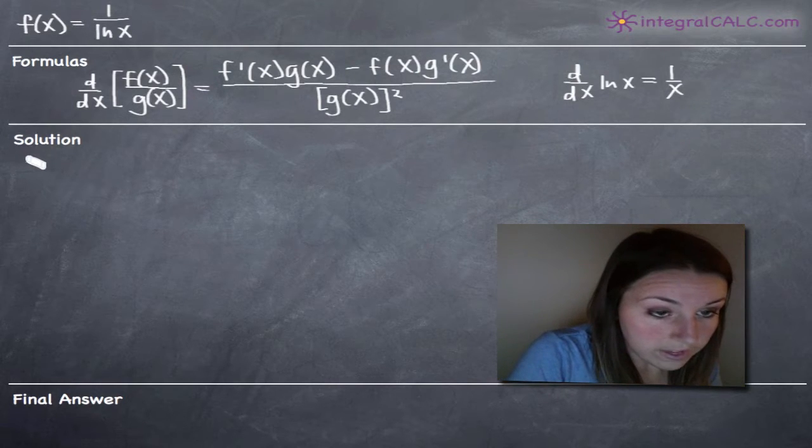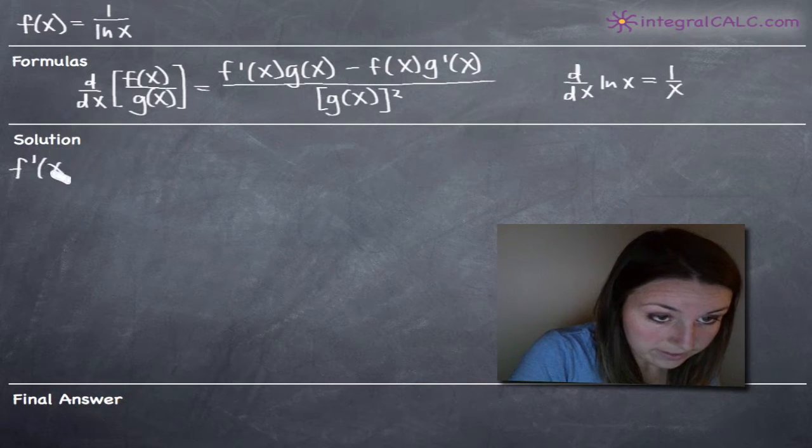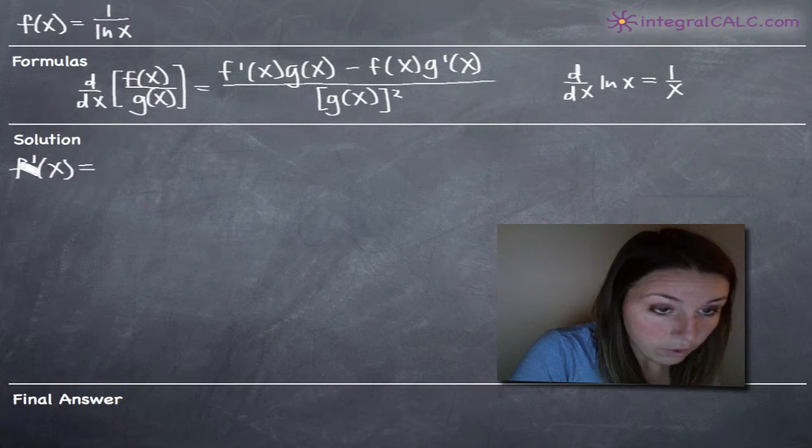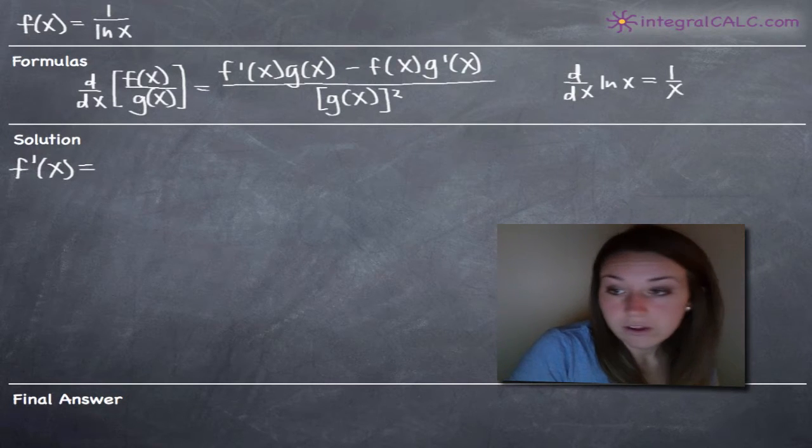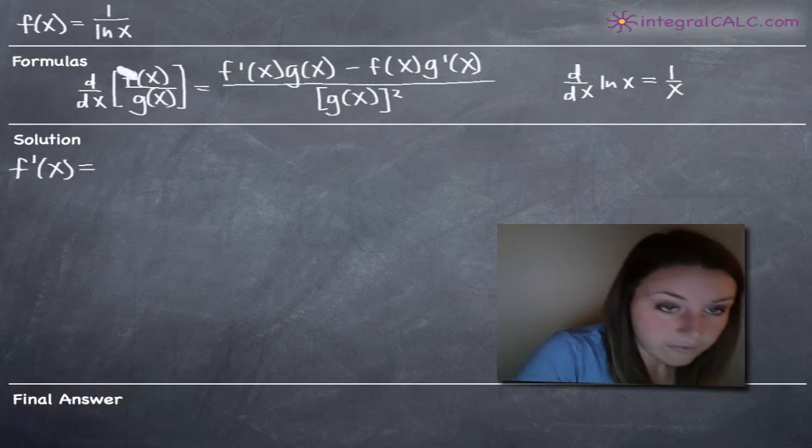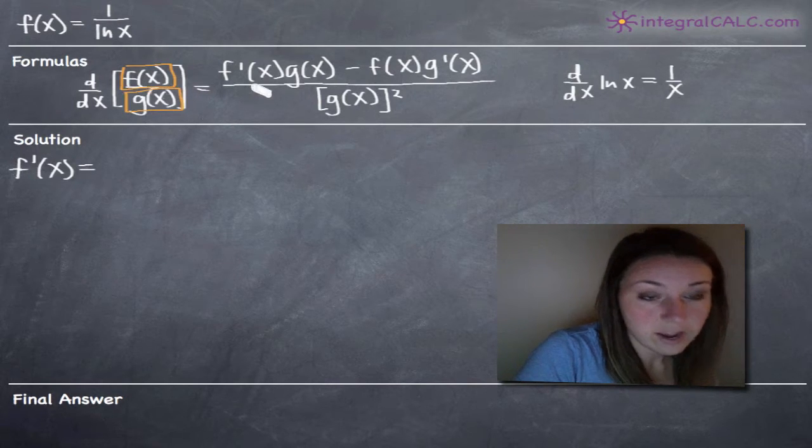We're going to take the derivative of f of x, which is always written as f prime of x. What our formula tells us is that we've got f of x as our numerator and g of x as our denominator.